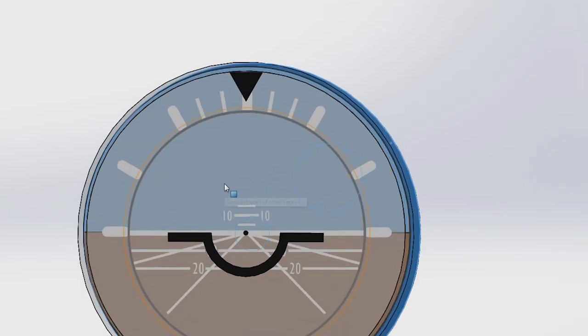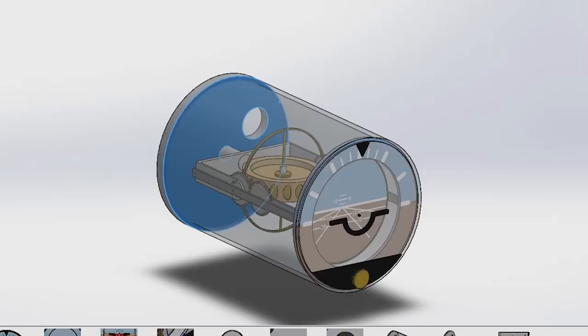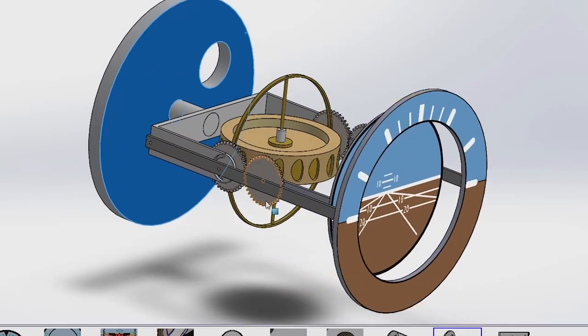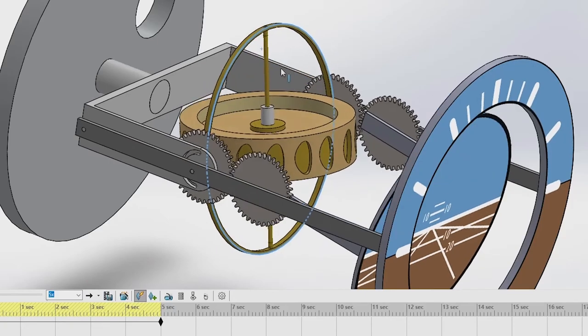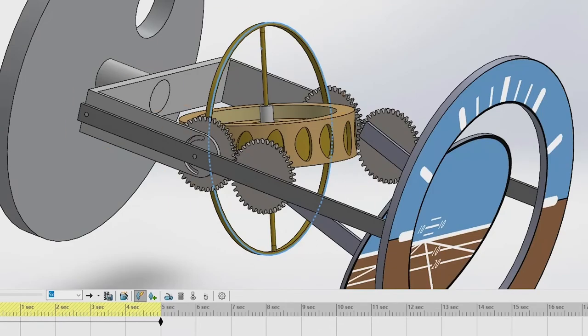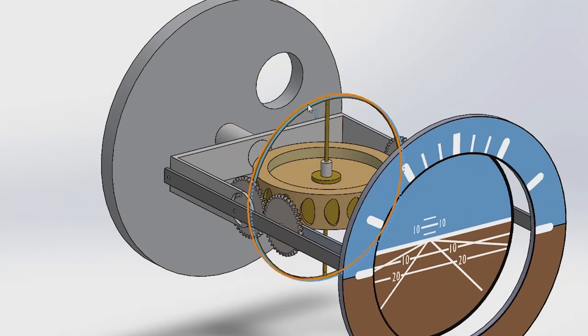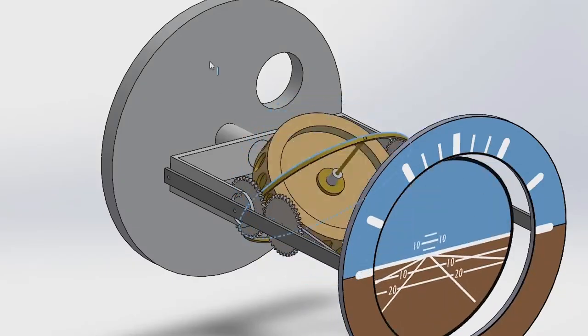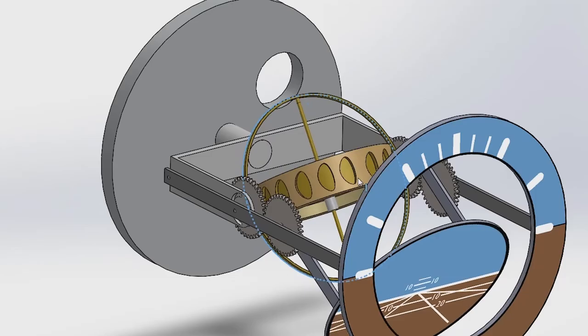Next, the disadvantages of the attitude indicator is that the gyroscope needs electricity to function. So, if there is no electricity, then there will be no gyroscope. The attitude indicator will not function. Another is that the attitude indicator gyroscope is so sensitive that when the free rotation is disturbed, the attitude indicator will not work anymore. And it needs a specialist or a mechanic for it to be fully functionable again for it to work. That is all. Thank you very much.